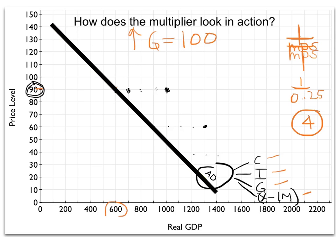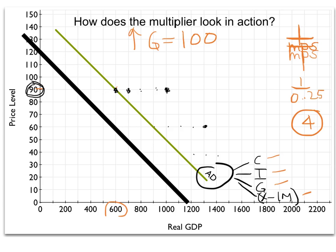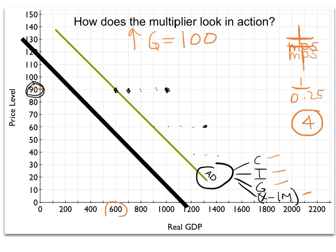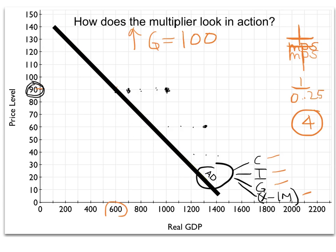The same logic applies to a leftward shift. A decrease in government spending by $100 will play out as a much larger decrease over time. And that's how you work the aggregate demand curve with a multiplier.